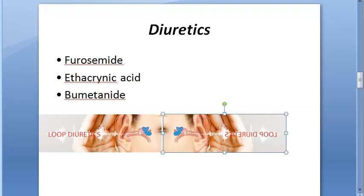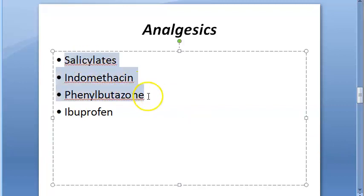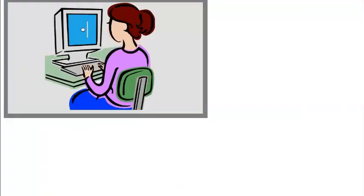Analgesics like salicylic acid and salicylates cause tinnitus and bilateral sensorineural hearing loss, with higher frequencies most affected. If the drug is discontinued, the damage is typically reversed.